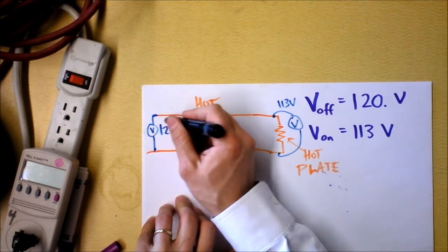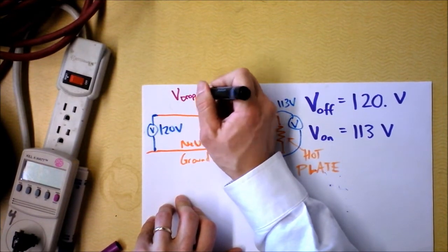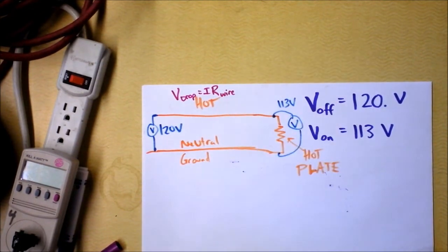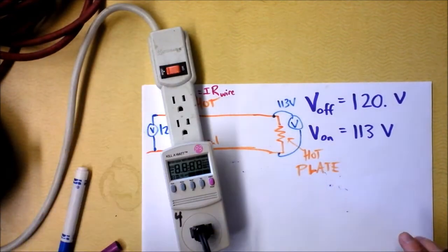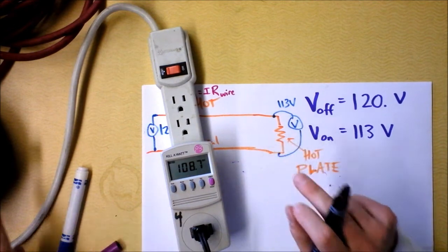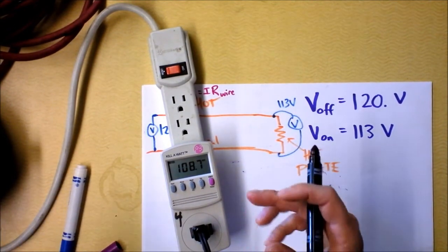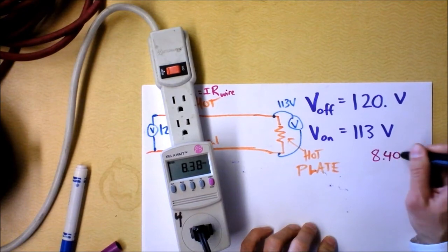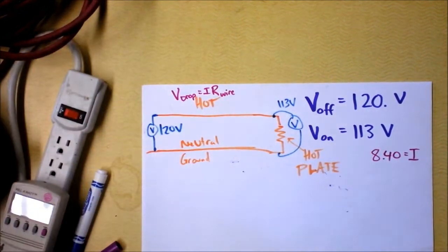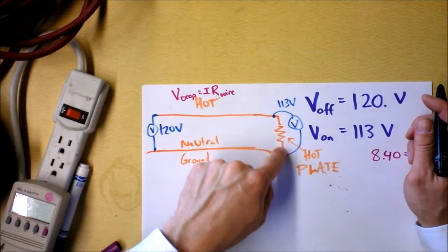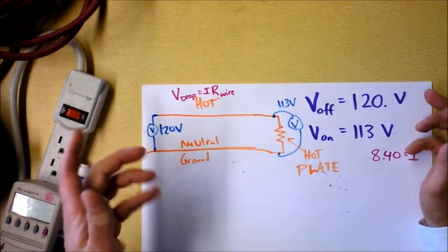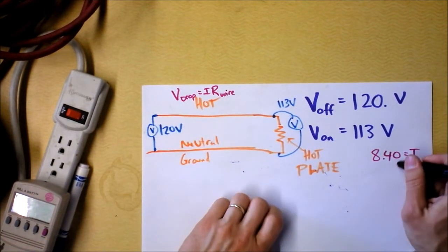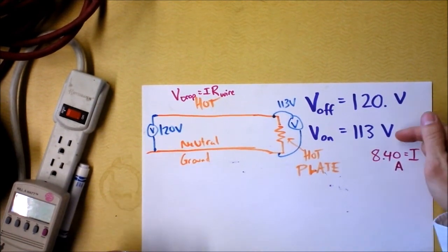This voltage drop is happening across this wire right here, and we can say the voltage drop is the current through the wire times the resistance of the wire. And what I didn't get for you is the current through my hot plate. So let's get that right now. It says 8.40 amps. And what I want you to note is that that's going to be the current through this conductor, and it will be the current through the hot plate, and it will be the current back on the ground. By the principle of diarrhea, this has to be the current throughout the entire thing. So I've got that current, 8.40 amps, and I've got a voltage on and a voltage off.